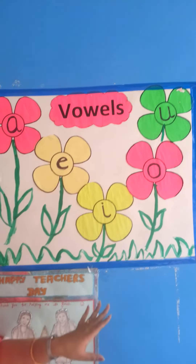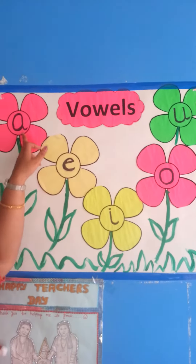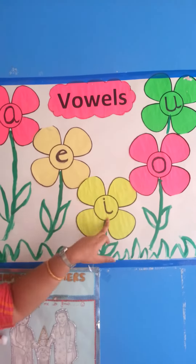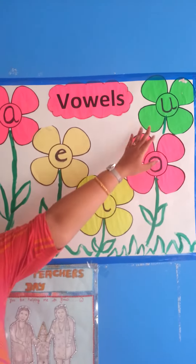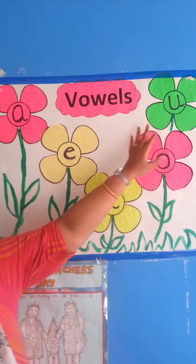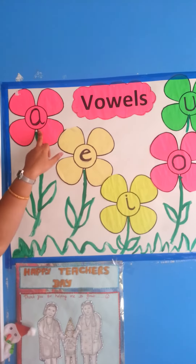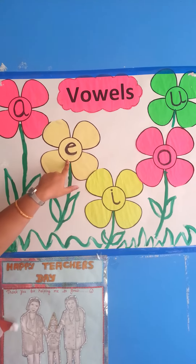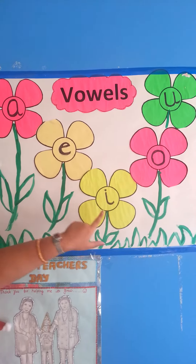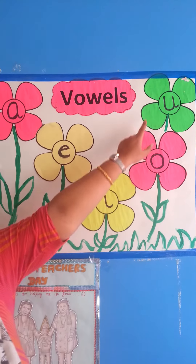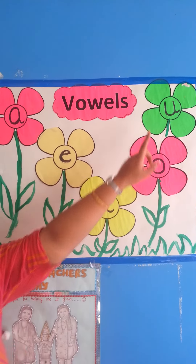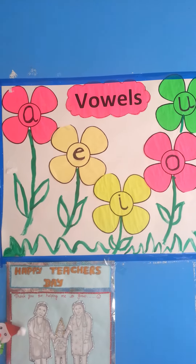How many vowels are there? One, two, three, four and five. And what are they? A, E, I, O and U.